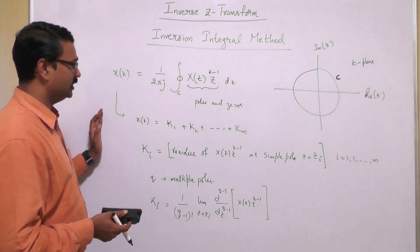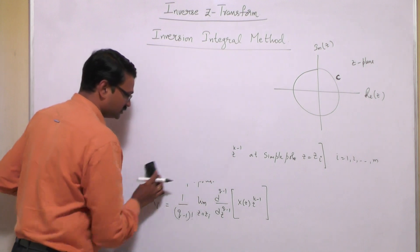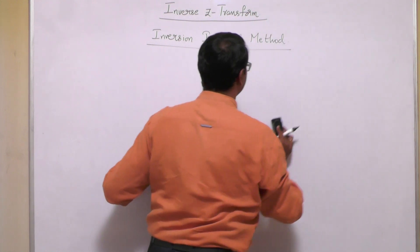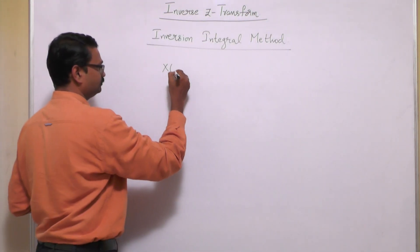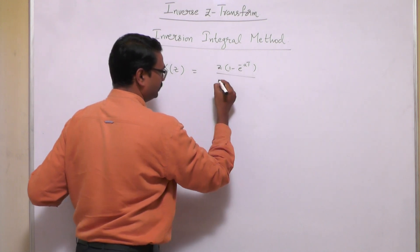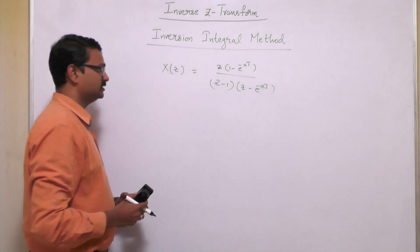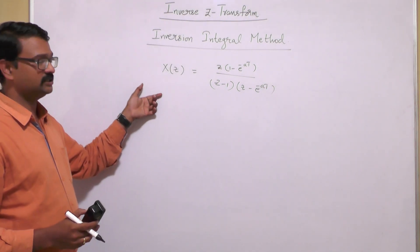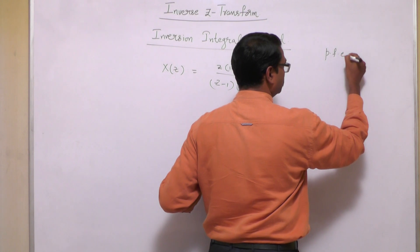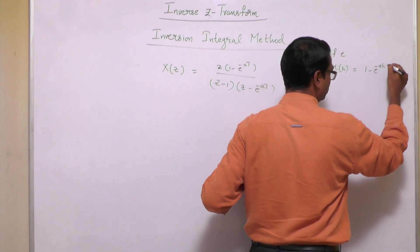Therefore, we will try to understand a particular problem to find the inverse Z-transform using the inversion integral method. The example is X(Z) = Z(1 - e^(-aT)) / [(Z-1)(Z-e^(-aT))]. We have already used this example in the partial fraction expansion method, and the solution obtained for X(k) is 1 - e^(-akT).